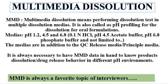pH 1.2 can be made by 0.1 normal HCl, pH 4.5 by acetate buffer, and pH 6.8 by phosphate buffer. These medias are not limited to only these three. As per the product requirement and product design, regulatory authorities may also ask for other medias. The medias are in addition to the QC release media or principal media.